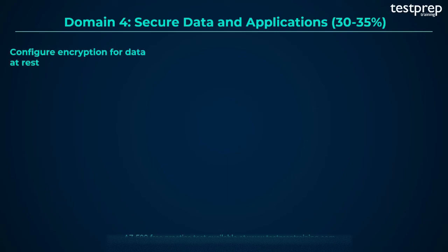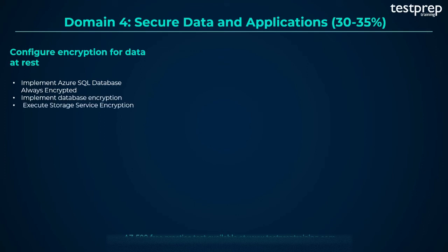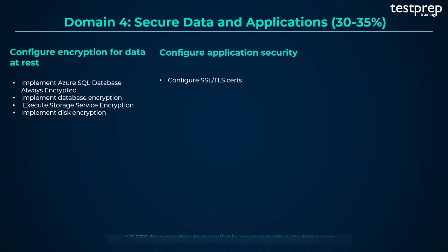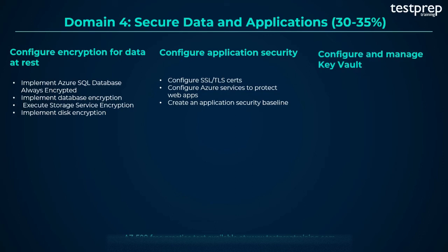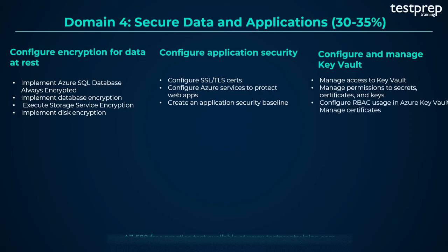Number 3: Configure encryption for data at rest. It contains four subtopics: implement Azure SQL Database Always Encrypted; implement database encryption; execute storage service encryption; and implement disk encryption. Number 4: Configure application security. It contains three subtopics: configure SSL or TLS certs; configure Azure services to protect web apps; and create an application security baseline. Number 5: Configure and manage Key Vault. It contains six subtopics: manage access to Key Vault; manage permissions to secrets, certificates, and keys; configure RBAC usage in Azure Key Vault; manage certificates; manage secrets; and configure key rotation.